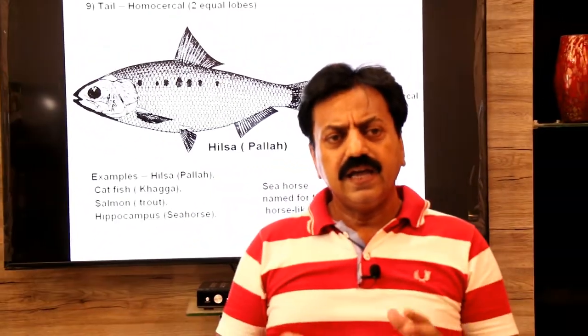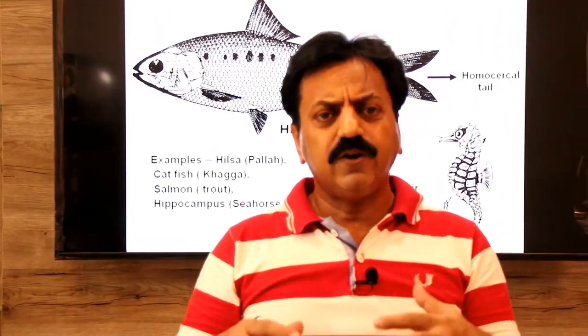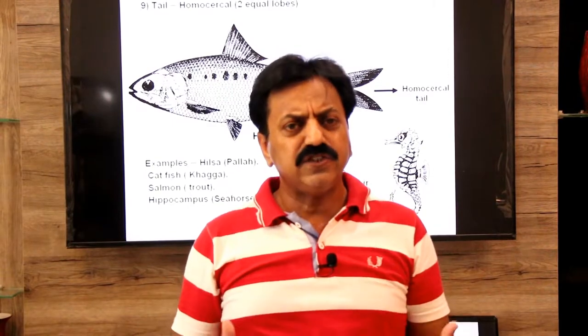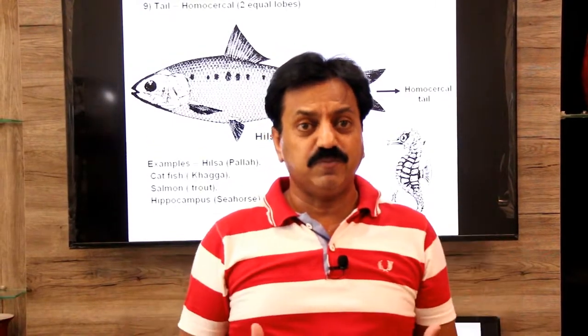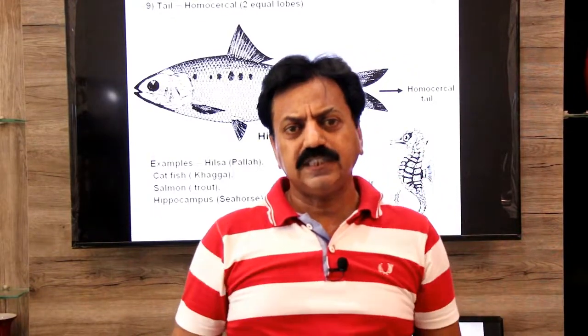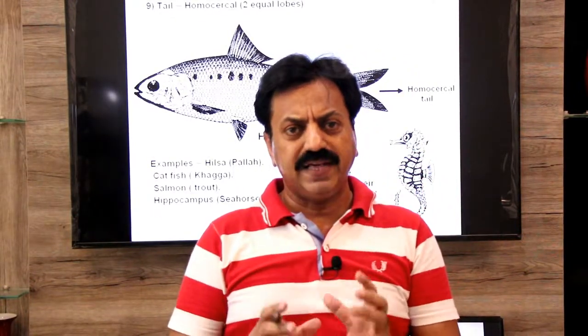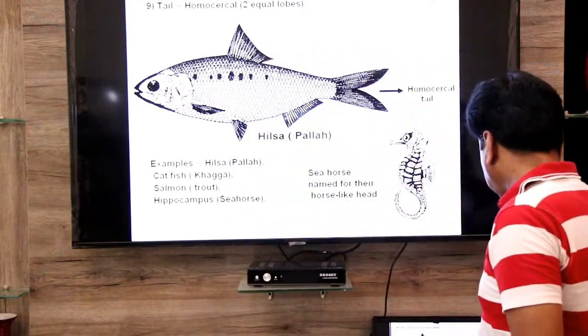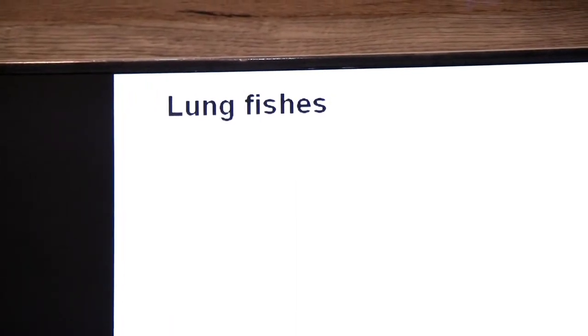Dear students, we have main characteristics. In our textbook, there is an order of bony fishes. This is a fish that has developed lungs, evolution, and their lungs are modified air bladder.